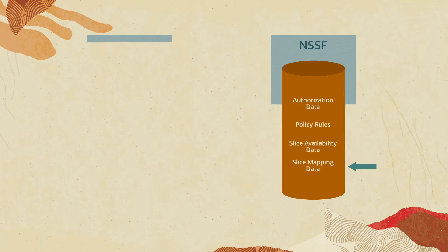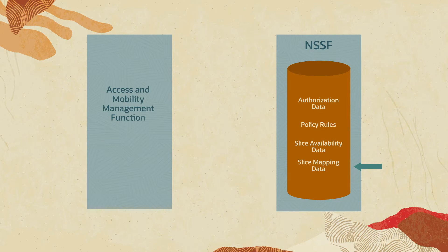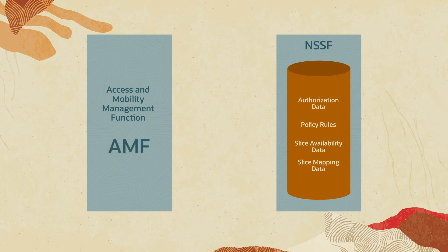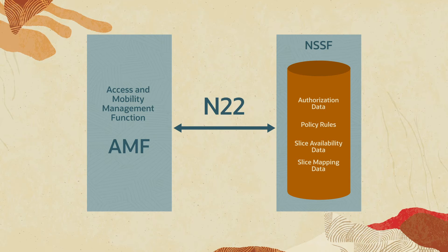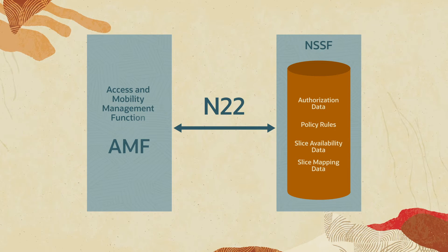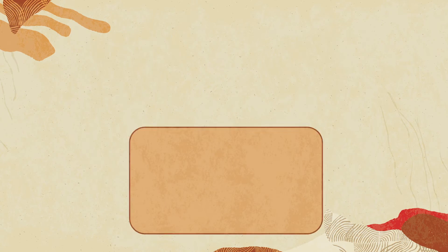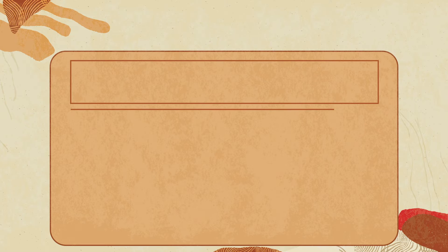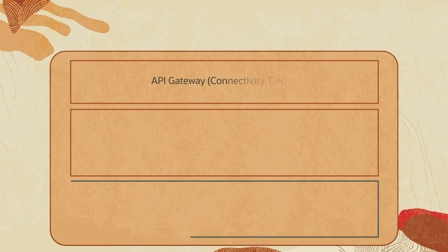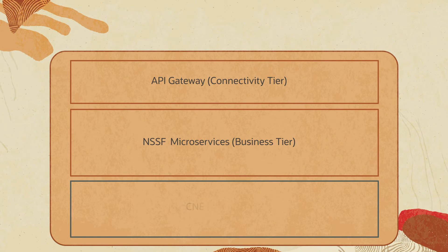Consumer NF, for example, Access and Mobility Management Function, AMF, interacts with NSSF through the communication interface N22. It has a three-tier architecture: connectivity tier, business tier, and data tier.